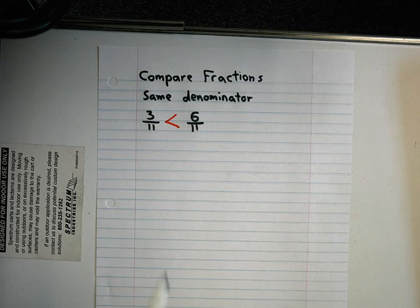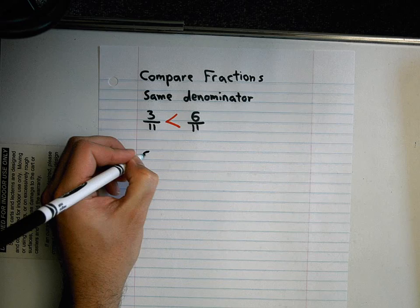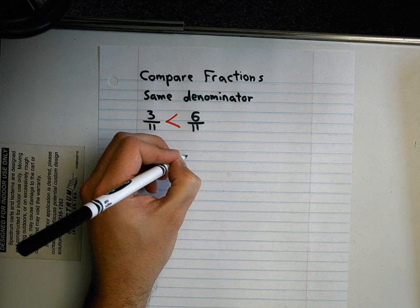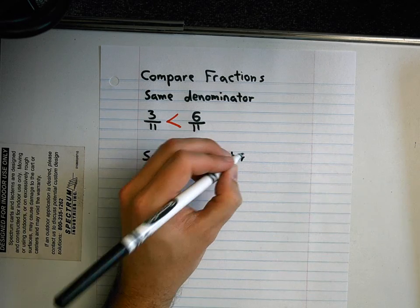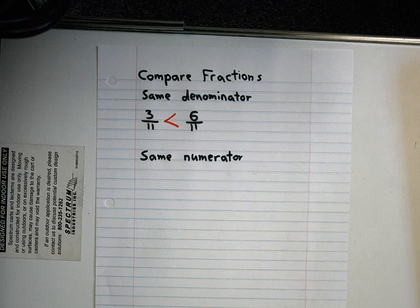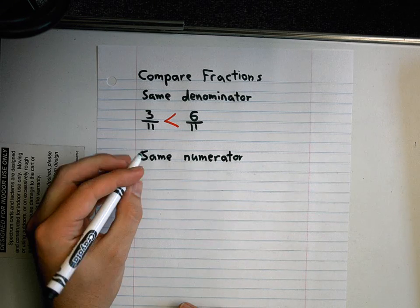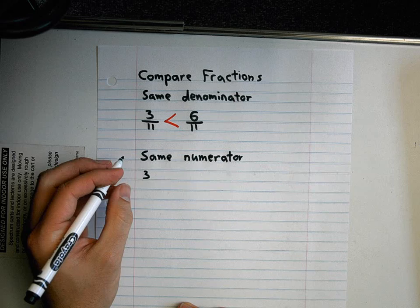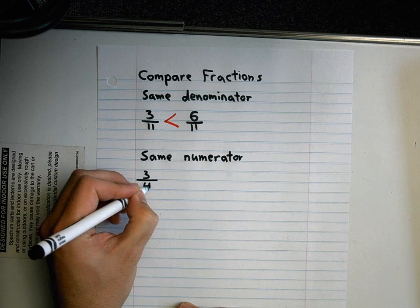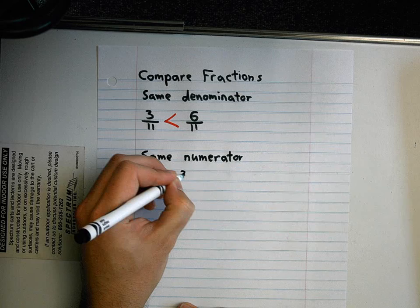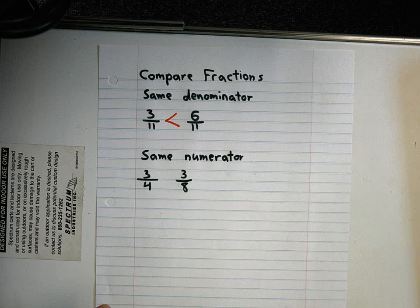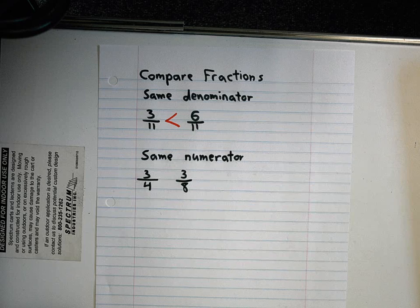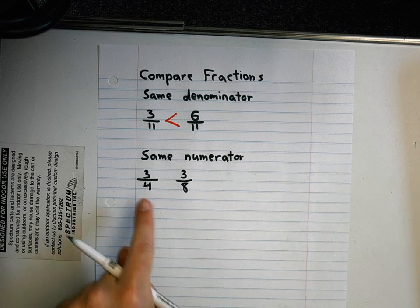Now sometimes when it has the same numerator and a different denominator, it can be a little tricky at first until you realize what we're actually asking for. So let's say I have three fourths and three eighths. When you were in second grade and we first started doing these types of problems, most people would say three eighths is greater because it has an eight in it and eight is more than four.